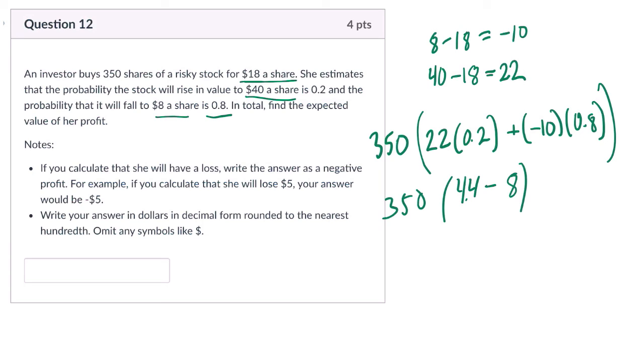Overall, we should expect to lose $1,260. That's her value. So minus 1260 is the expected value of the profit. You're losing $1,260.